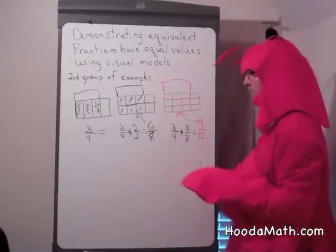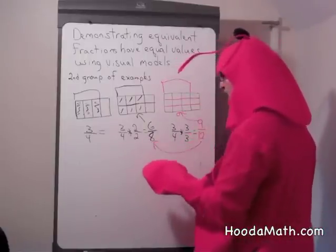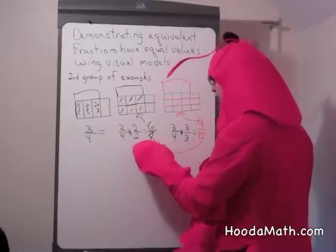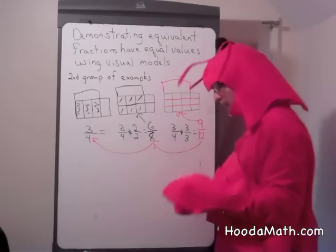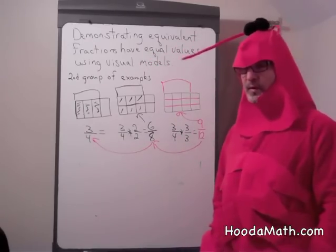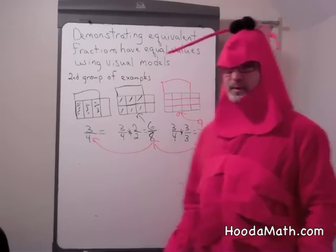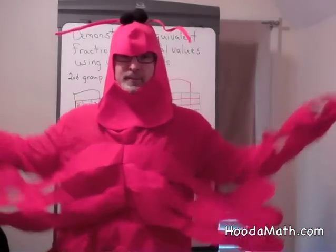9 out of 12 is the same as 6 eighths, and has the same value as 3 fourths. Why do I know it? Because I'm the Math Lobster.